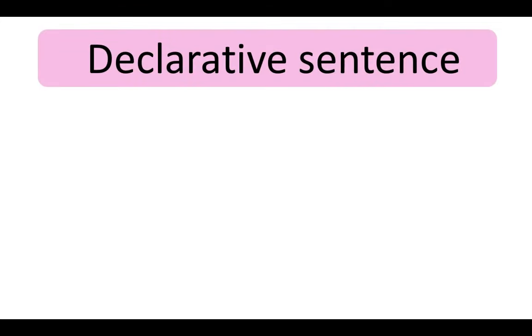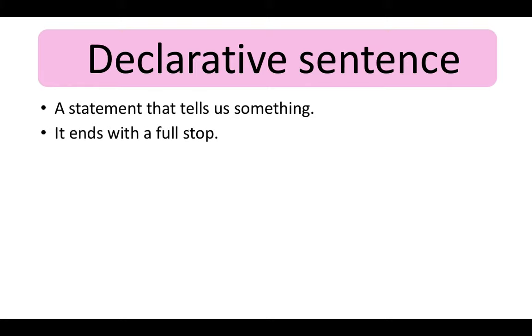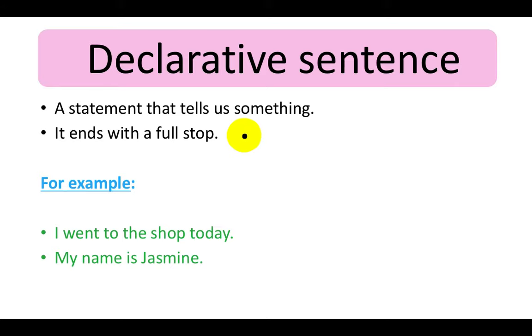Declarative sentence. This sentence is a statement that tells us something. It ends with a full stop. For example, I went to the shop today. My name is Jasmine.